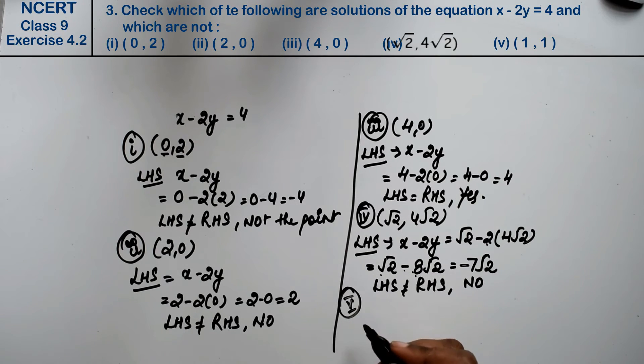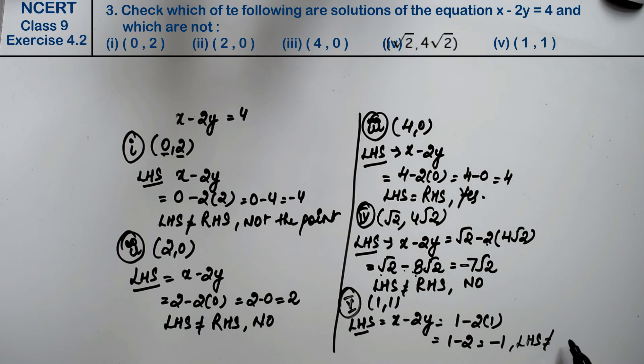Let's do last part. Last part is (1, 1). Left-hand side is x minus 2y, that means 1 minus 2 into 1. 1 minus 2, that is minus 1. Left-hand side is not equal to right-hand side. Answer is no.